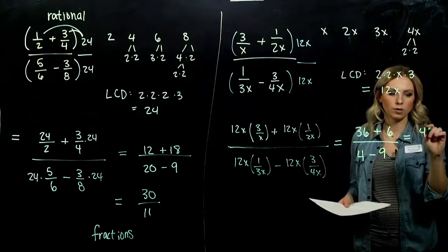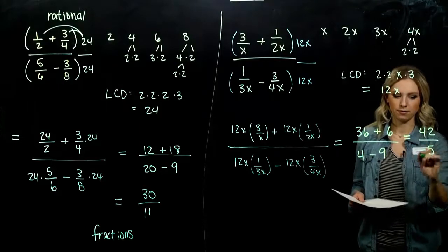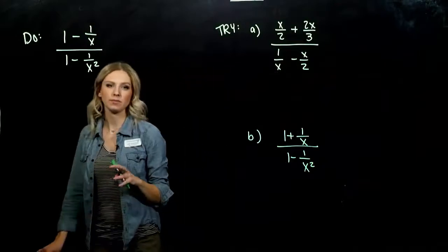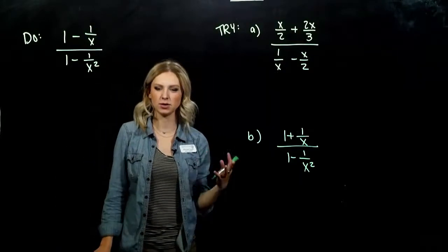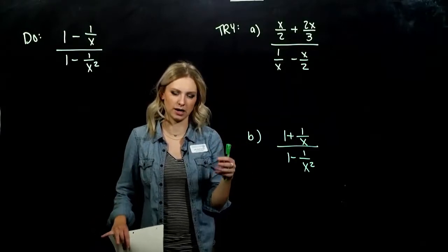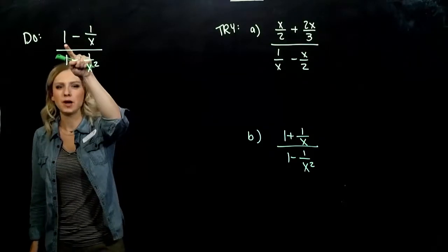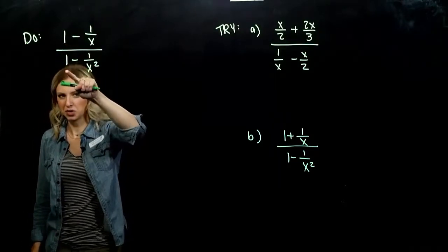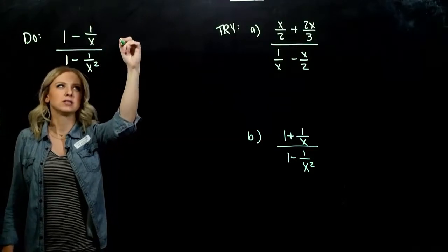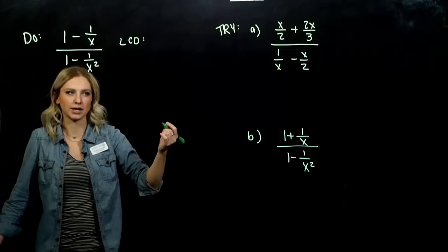That's our last example to do together before you try some. As we start practicing, we don't have to write down the prime factorizations of all our denominators — if we can see the LCD right off the bat, we can run with it. Looking at this next one, my denominators are 1 and 1 (those don't matter), and then x and x squared. The LCD between x and x squared is x squared.